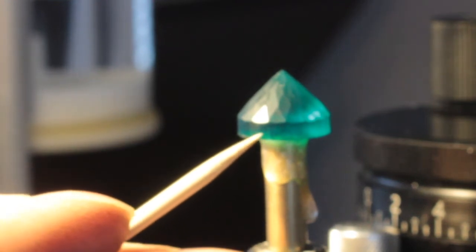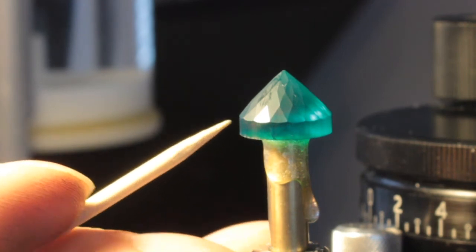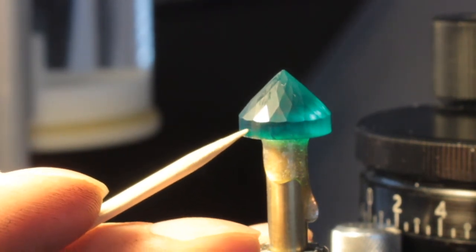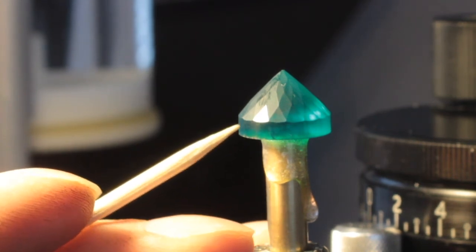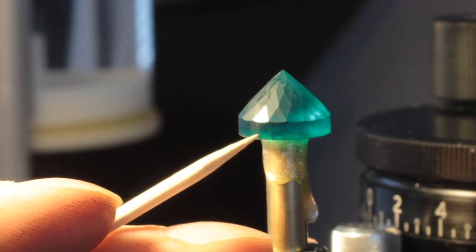So when I cut this, I did not cut 48 girdle facets to start with. When I was preforming it, I just cut every six. So only 16 girdles, 16 facets on the girdle to mess with instead of 48 saves a lot of time.